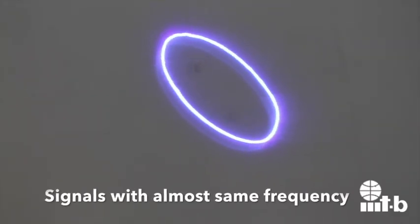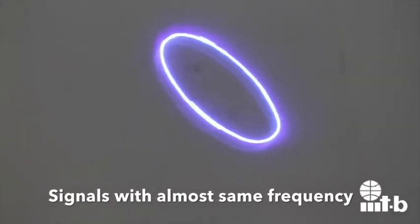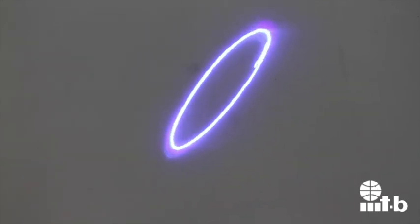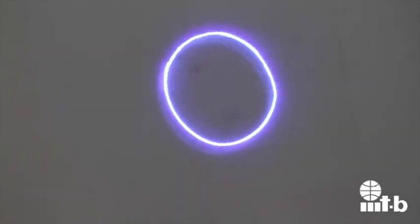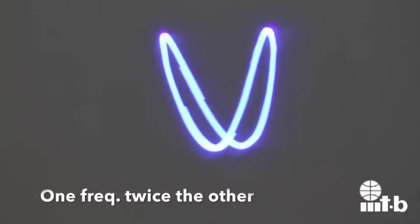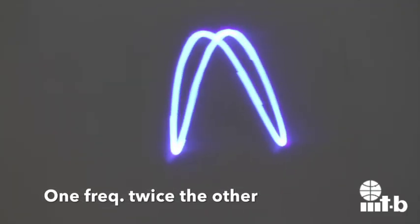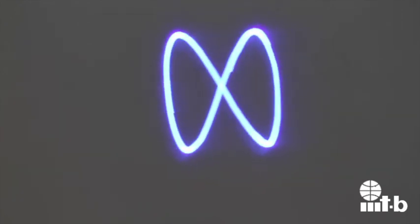The channel 1 versus channel 2 mode can be used to compare two signals. For example when two signals have almost same frequency they form a circle. Here is what happens when one of the signal goes from being twice the frequency, to four times the frequency of the other.